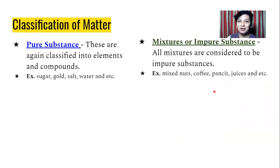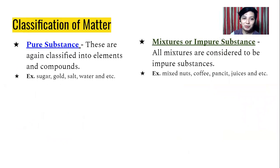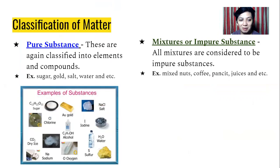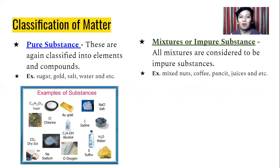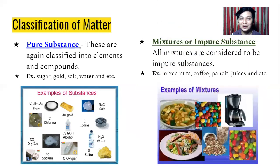In the classification of matter, pure substances are classified into elements and compounds. Examples include sugar, gold, salt, and water. If it is composed of one element or one atom, that is an element; if composed of two or more atoms, that is a compound. Mixtures or impure substances include mixed nuts, coffee, juices, and so on. These are all examples of mixtures.